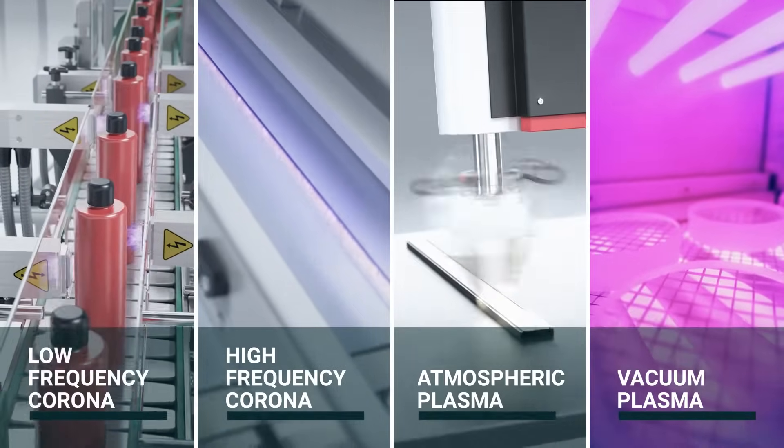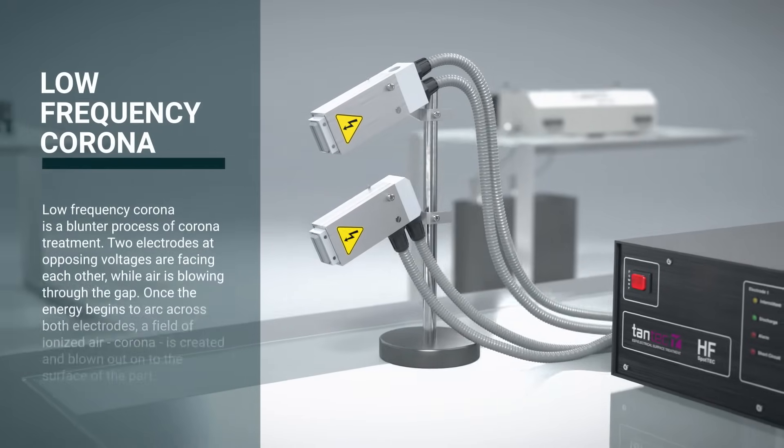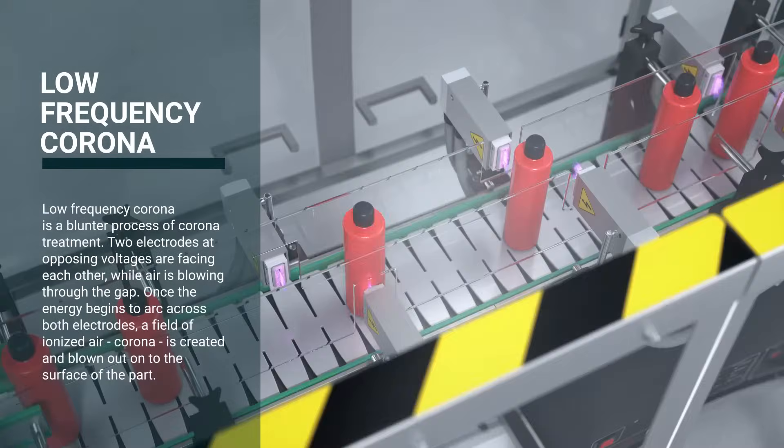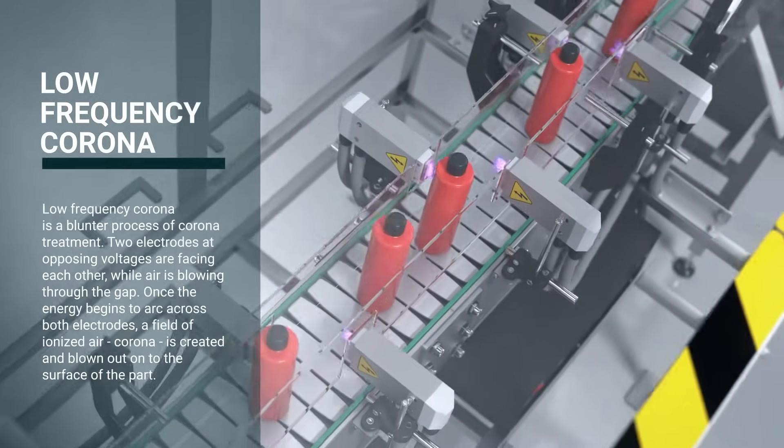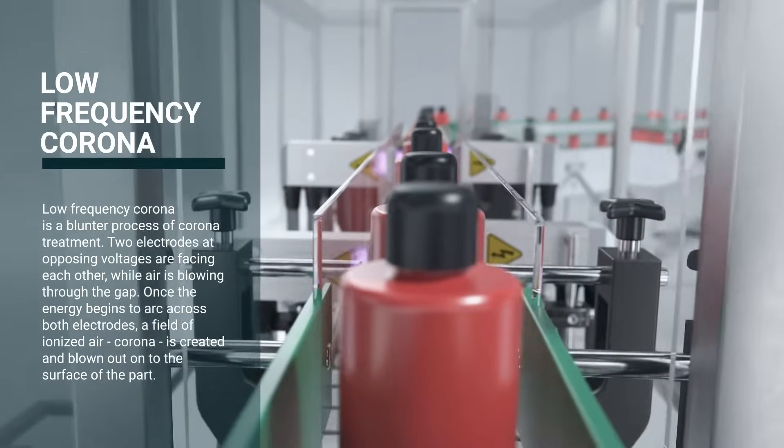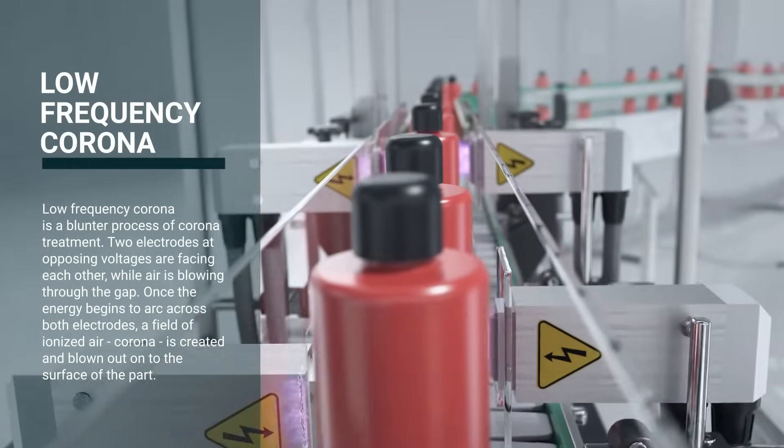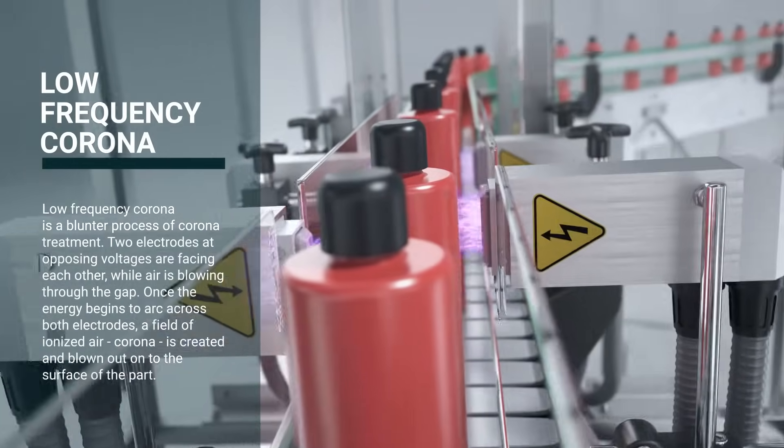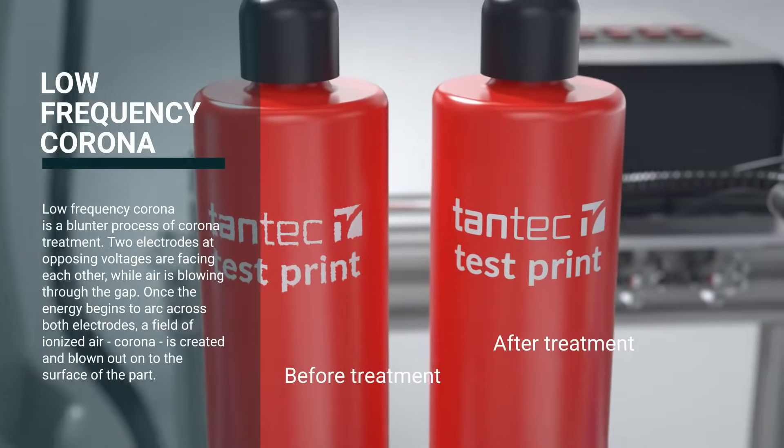Low-frequency corona is a blunter process of corona treatment. Two electrodes at opposing voltages are facing each other, while air is blowing through the gap. Once the energy begins to arc across both electrodes, a field of ionized air, corona, is created and blown out onto the surface of the part.